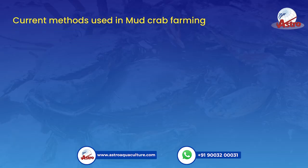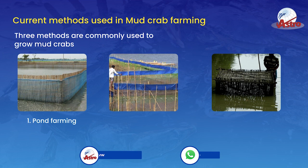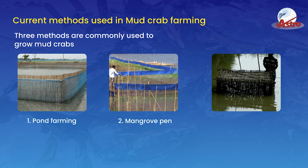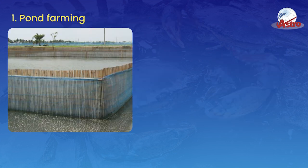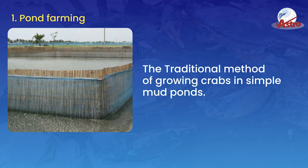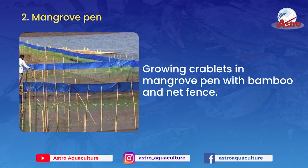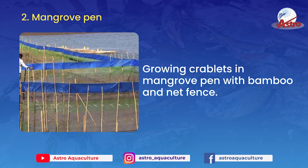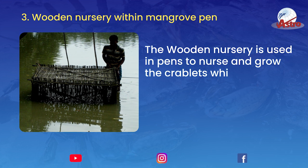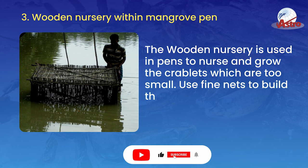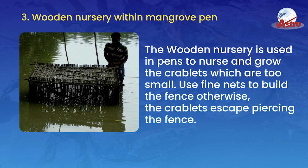Current Methods Used in Mud Crab Farming: Three methods are commonly used to grow mud crabs. First, Pond Farming — the traditional method of growing crabs in simple mud ponds. Second, Mangrove Pen — growing crablets in a mangrove pen with bamboo and net fence. Third, Wooden Nursery Within Mangrove Pen — a wooden nursery is used in pens to nurse and grow crablets that are too small. Fine nets must be used to build the fence; otherwise, the small crablets escape by piercing through.